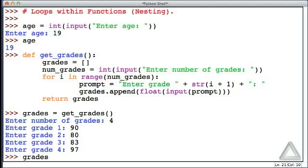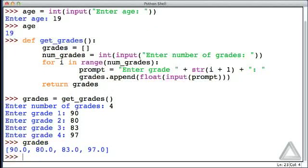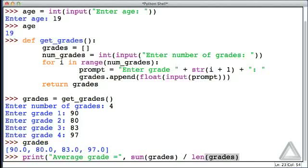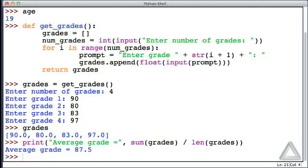Now what's contained in grades? Those four grades as floats. We could display the average grade with something like this. We could say print the string average grade is equal to, and then we could sum the values in that list and divide by the length of that list. Then we see the average grade is 87.5.